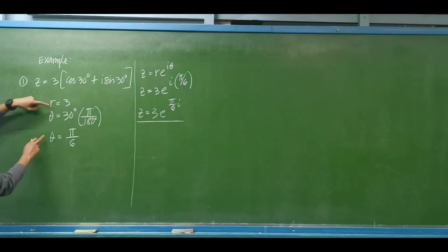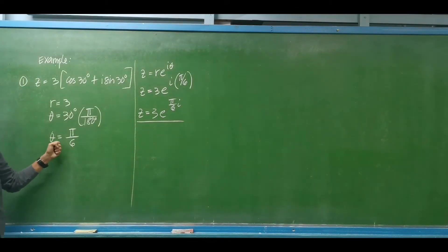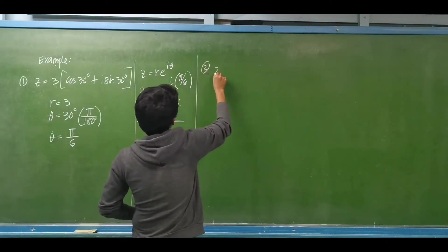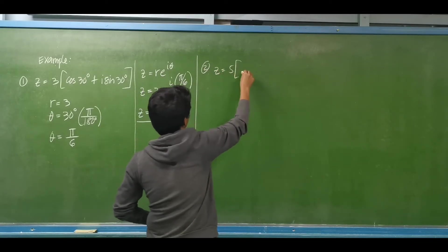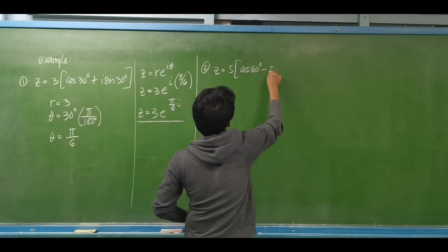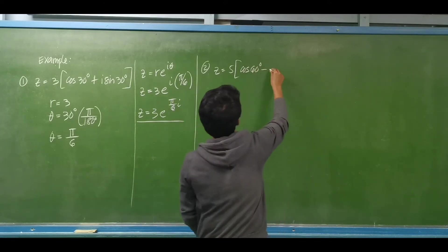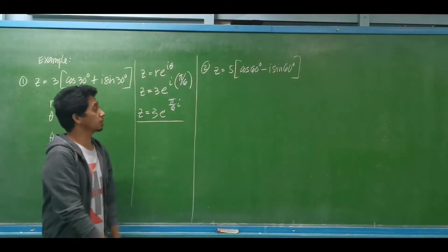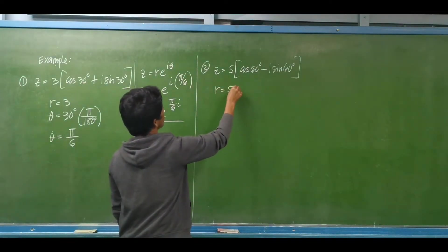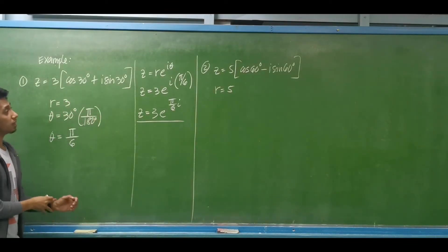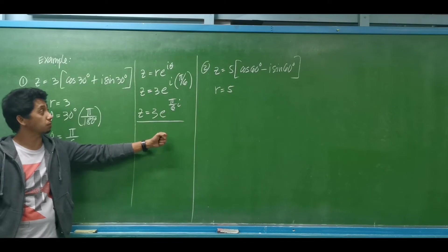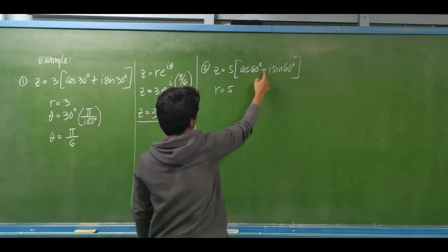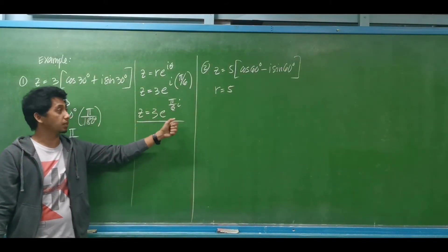From polar to exponential form it is easy — we are just copying the modulus and argument. However, consider another case: Z equal to 5 multiplied by the quantity cosine of 60 degrees minus i sine of 60 degrees. We can conclude the modulus is equal to 5, but we cannot directly conclude the argument is 60 degrees because the operation between cosine and sine is subtraction, not addition.